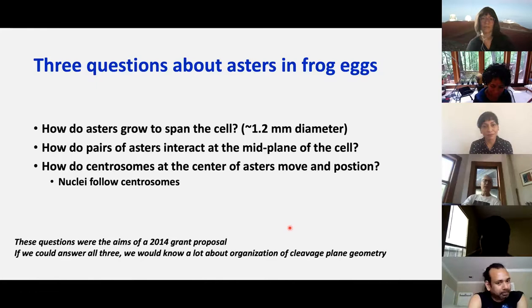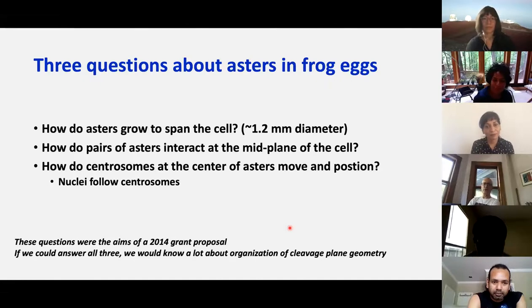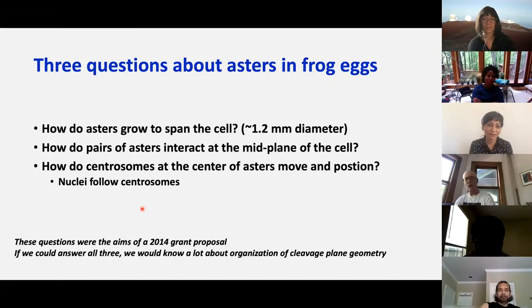The three questions we've been grappling with for the last few years are: how do these microtubule asters grow to span the cell to get these giant dimensions? How do pairs of asters interact at the midplane of the cell? And how do the centrosomes at the center of the aster move and position in order to ultimately control the geometry of successive cleavage planes? The nuclei follow the centrosomes. These three questions were the aims of an old grant proposal that I've been working on. I want to touch on each of them briefly but spend most time on the third, where James in particular made recent progress.